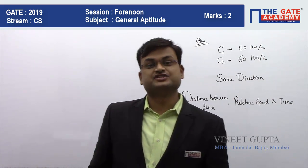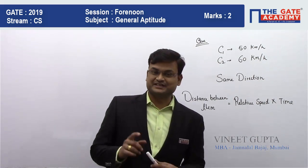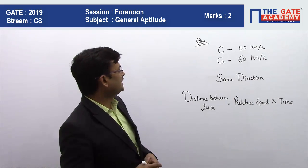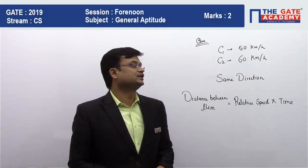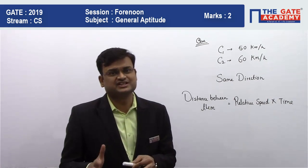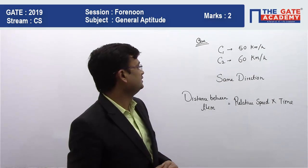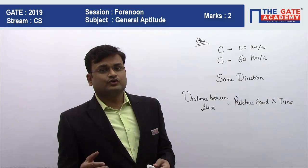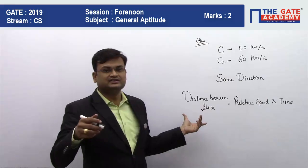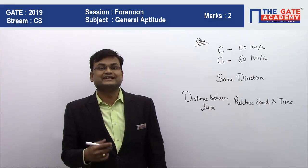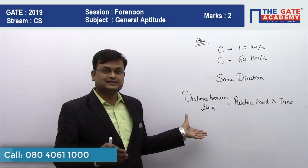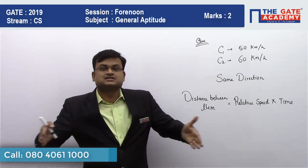In this video we'll be solving a general aptitude question from time, speed, and distance. The question says that there are two cars traveling in the same direction — one with a speed of 50 km/h and the second with a speed of 60 km/h. The question asks: after how much time will the distance between the cars become 20 kilometers?